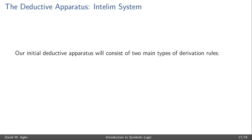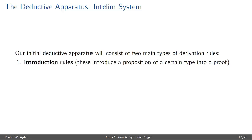We'll call the particular rules in the deductive apparatus the PD derivation rules. The natural deductive system we'll articulate will initially consist of two main types of rules. The first are introduction rules — these rules introduce into the proof a certain type of proposition or well-formed formula.